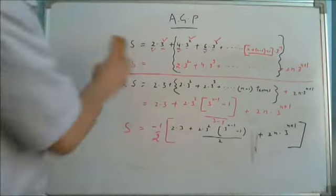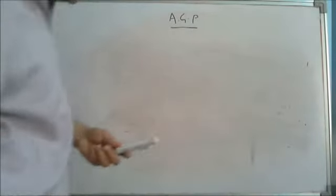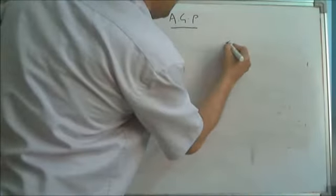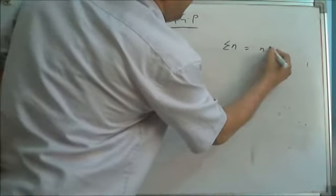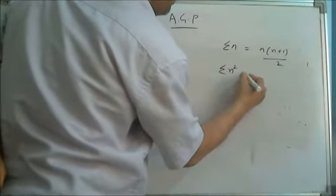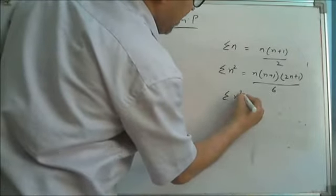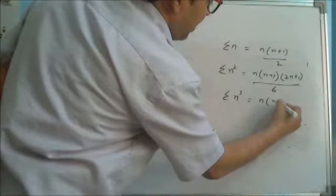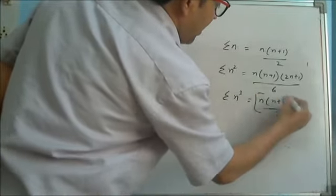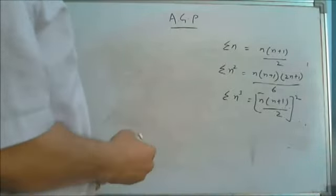Now I will go for some special sequence sums. You just remember these three subject formulas: Summation of n = n(n+1)/2. Summation of n² = n(n+1)(2n+1)/6. And summation of n³ = [n(n+1)/2]². You just remember these 3 formulas. We will make use of these formulas in finding the sum of special series.